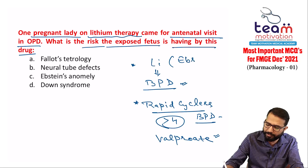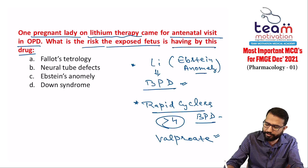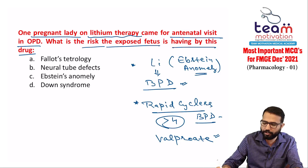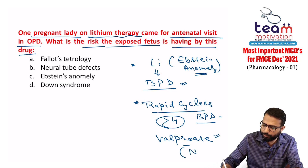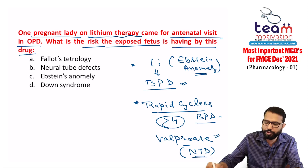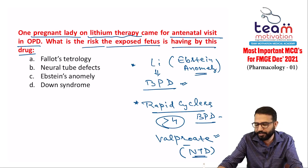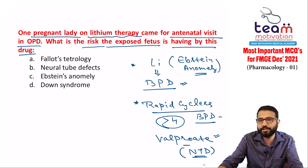If lithium is used during pregnancy, there is a risk of Ebstein's anomaly, identified by a box-shaped heart on imaging. Valproate causes neural tube defect (spina bifida). Both lithium and valproate are not safe during pregnancy.